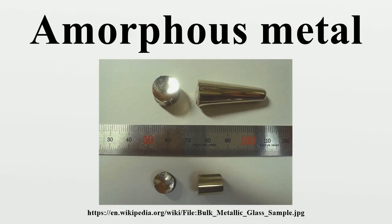The alloy Ti40Cu36Pd14Zr10 is believed to be non-carcinogenic, is about three times stronger than titanium, and its elastic modulus nearly matches that of bones. It has high wear resistance and does not produce abrasion powder. The alloy does not undergo shrinkage on solidification, and a surface structure can be generated that is biologically attachable by surface modification using laser pulses, allowing better joining with bone.